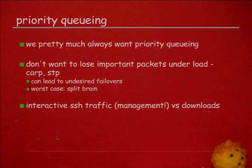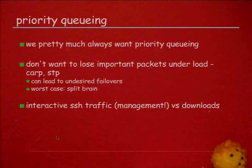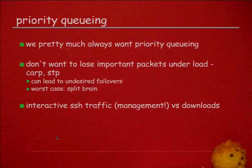You pretty much always want priority queuing. It's only really useful when you are under load — either the machine being overloaded or the link. But once you are in these overload situations, you really want priority queuing because you don't want to lose important packets. For example, if you run CARP, you certainly do not want to lose the CARP announcements. If somebody is doing so much downloading that your link is saturated and you drop the CARP packets, the other node thinks you are dead and takes over. But since you're not dead and still think you're master, you have a master-master situation where both machines try to forward packets, and obviously bad things happen.